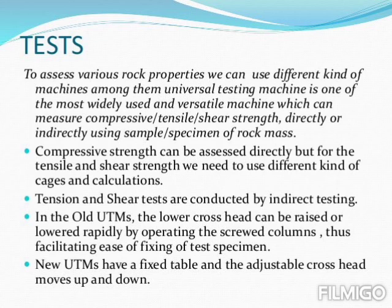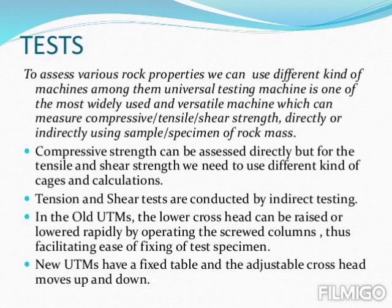Tension and shear tests are conducted by indirect testing. In old universal testing machines, the lower crosshead can be raised or lowered rapidly by operating the screwed columns, facilitating ease of fixing the specimen to be tested. In new UTMs, there is a fixed table and the adjustable crosshead moves up and down.